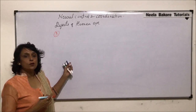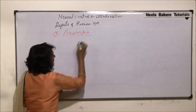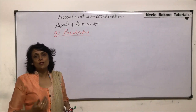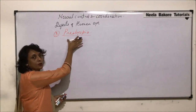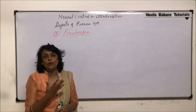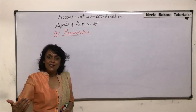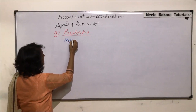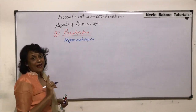The next disorder is known as presbyopia. It is actually hypermetropia but due to old age. As we start aging, the elasticity of the lens is lost and that is when this problem is caused. It means the closer things are not visible, and that is why people keep what is to be read at a distance so that they are able to focus it on the retina.